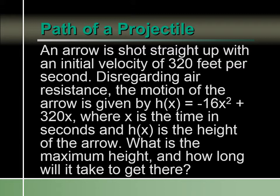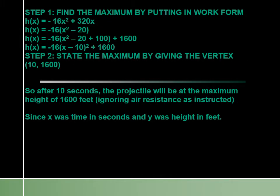We want to know what is the maximum height, and how long will it take to reach that maximum height. Step one: find the maximum by putting our equation in work form. The equation is h(x) equals negative 16x squared plus 320x. The first thing we want to do is factor out negative 16, which gives us negative 16 times x squared minus 20x.